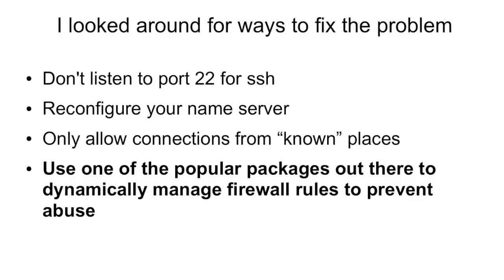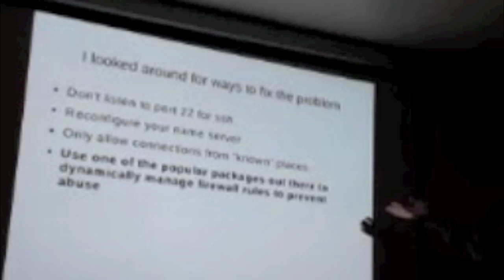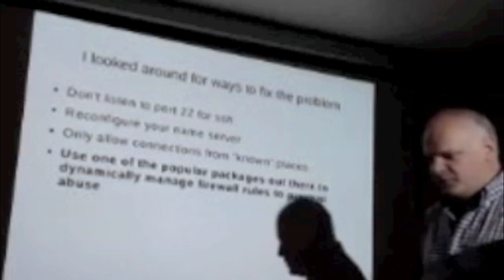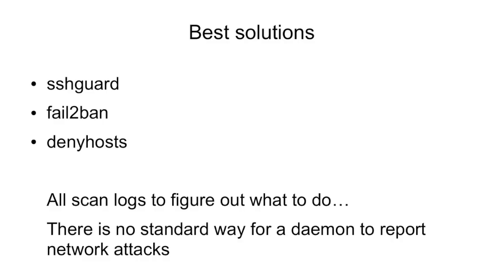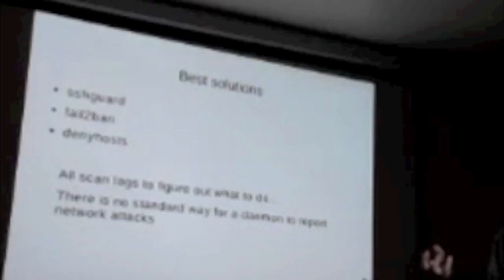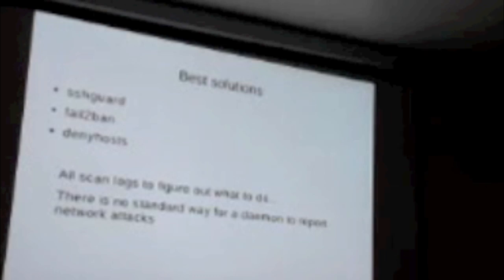So what do you do? You say okay, I'm not going to listen on port 22, I'll listen on 2022. I'll reconfigure my name server so it doesn't answer certain queries on certain interfaces. I'll only allow connections from friends and networks I know. Or use the popular packages out there — the most popular I found were SSHGuard, Fail2Ban, and DenyHosts. Basically, they look at your logs and try to parse them, but there's no good way for a daemon to communicate 'I'm under attack' and centrally manage this.